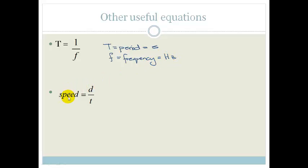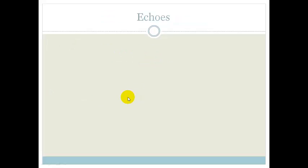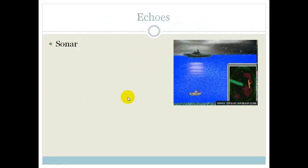Right, old one that we know about, speed is equal to distance over time, and distance again, SI unit is meters, and time again is seconds. So, now let's look at a couple of uses of sound. The first one is our echoes.